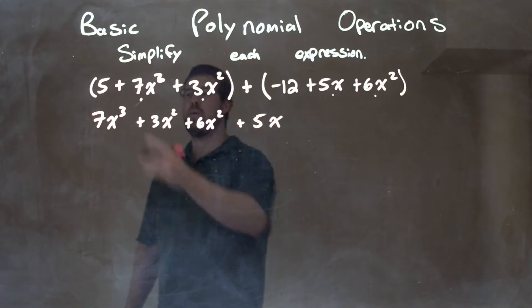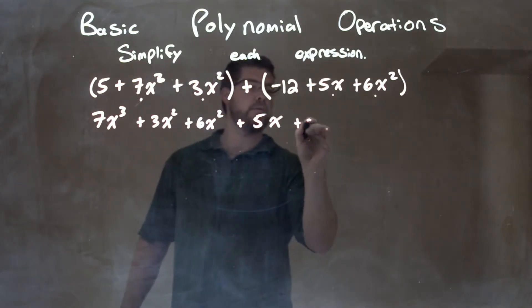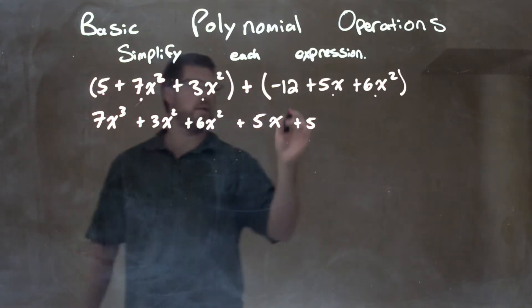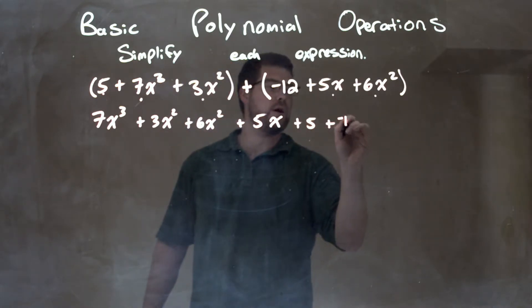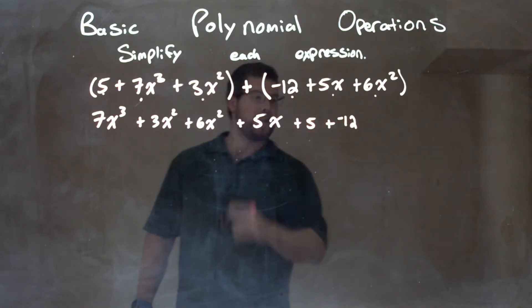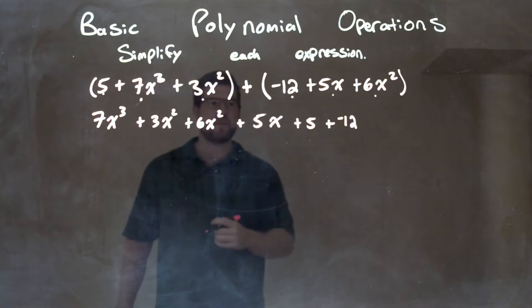Then I see we'll have a constant 5, and then a negative 12, or plus a negative 12. So a negative plus a negative 12 right there.